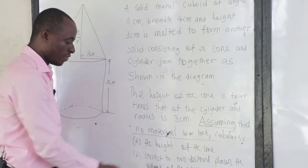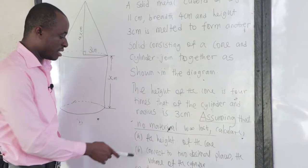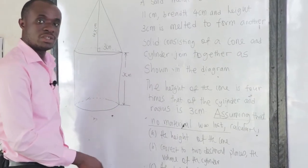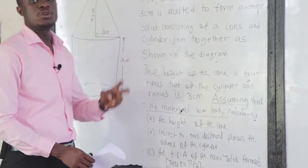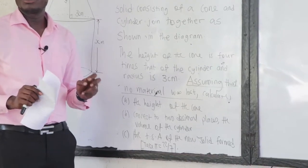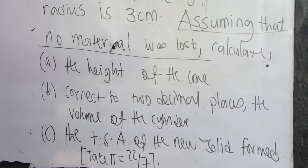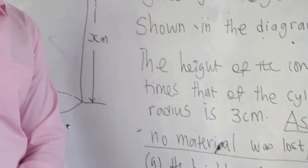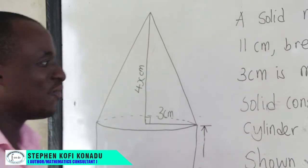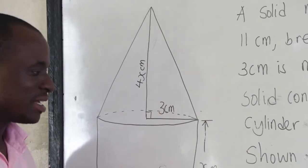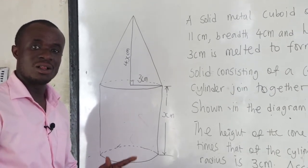The question asks us to: (a) calculate the height of the cone, which requires finding x; (b) find the volume of the cylinder correct to two decimal places; and (c) find the total surface area of the new solid. Since no material was lost, the volume of the cuboid equals the volume of the cone plus the volume of the cylinder.